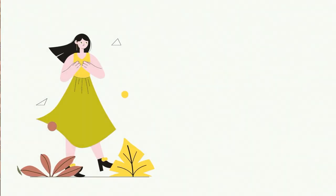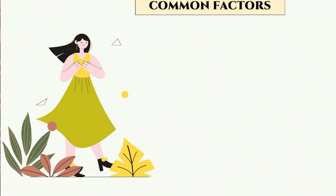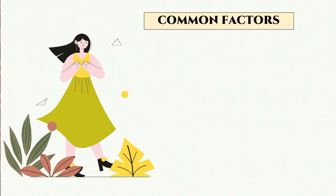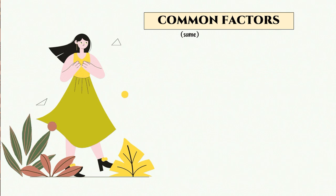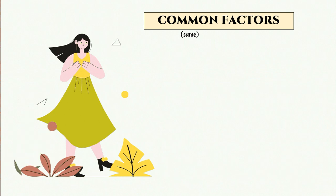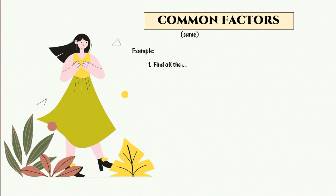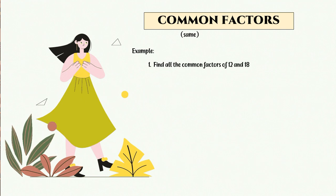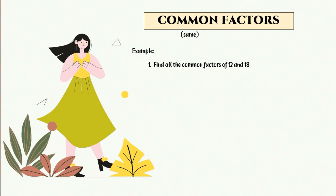So for today, we are going to learn about common factors. Common factors are the same factors found in both numbers. For example, find all the common factors of 12 and 18. We want to find the common factors — how do we find them?